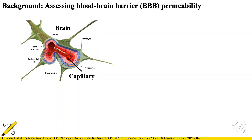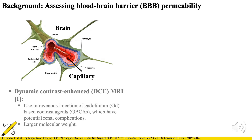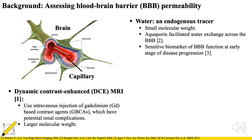The blood-brain barrier controls the exchange between the blood and brain compartments. Dynamic contrast-enhanced MRI has been commonly used to measure BBB permeability with injection of gadolinium-based contrast agents. However, due to the large size of the contrast agent, DCE-MRI is usually only useful when the BBB is already disrupted. Compared to contrast agents, water is an endogenous tracer with a much smaller molecular size, and studying water permeability is a hot topic sensitive to BBB function and early disease progression.